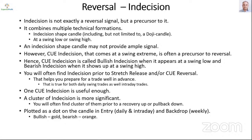Continuing with reversal indicators: the indecision indicator. Strictly speaking, it is not a reversal signal, but it is a precursor to it. Whenever we see this qualification 'precursor,' it is actually very useful because we get advance alert that a reversal may be happening. It combines multiple technical formations — one is an indecision shape candle, including but not limited to a doji candle. It has to appear either at a swing low or swing high. These two characteristics together often become a precursor to a reversal.